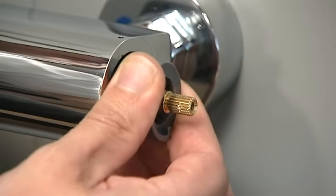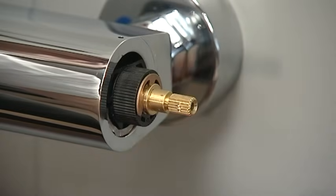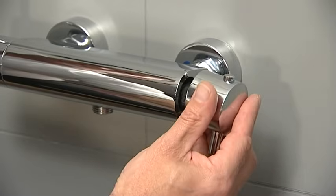Remove the temperature stop ring. With the shower in the on position, replace the temperature handle on the thermostatic valve.